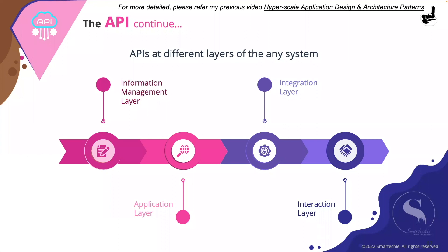The information management layer is where, throughout the system, you have some metadata or core data available that you need to deal with day to day, or that other applications need to work with. That's where a set of APIs is needed to interact with and manage that information. The next one is the application layer — for example, there is a microservice running on the system.